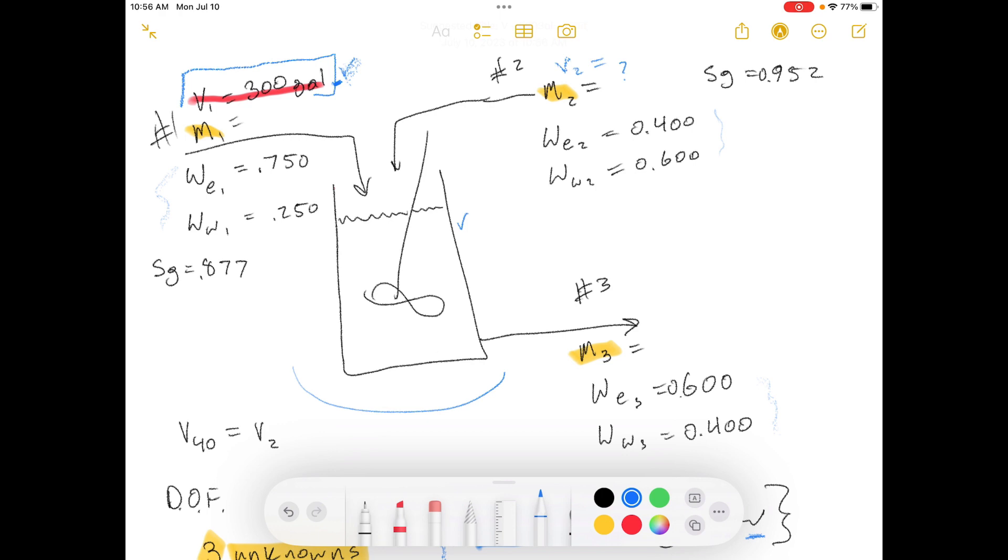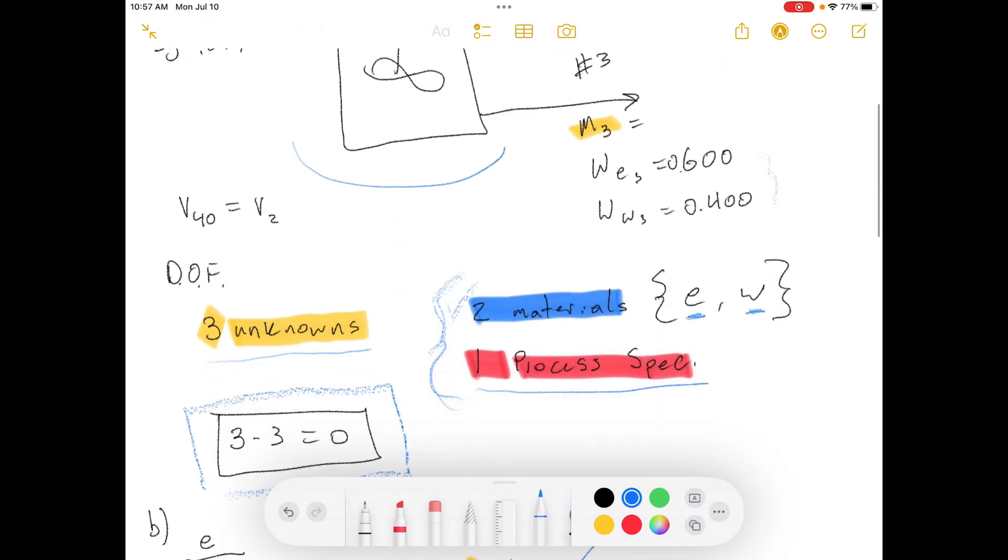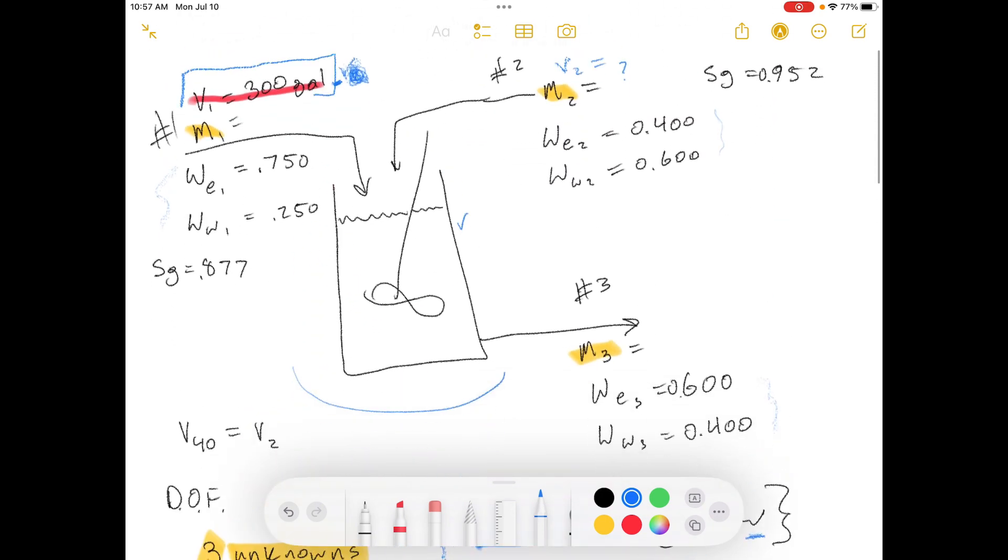So if you do an overall mass balance, which is mass one plus mass two equals mass three, then you can plug in some of this information and it becomes an independent equation because you've used new information.